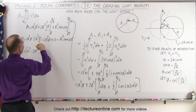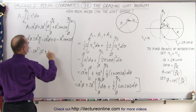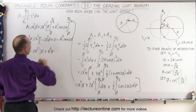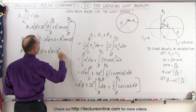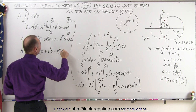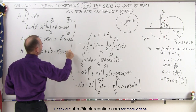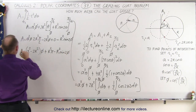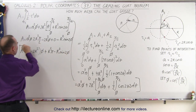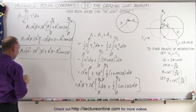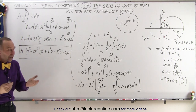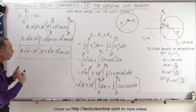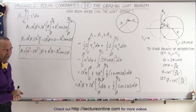...plus — the twos cancel out — R squared times π, and then minus R squared times sin(2φ). That's probably the simplest we're going to get this, and that is the area that the goat can reach.